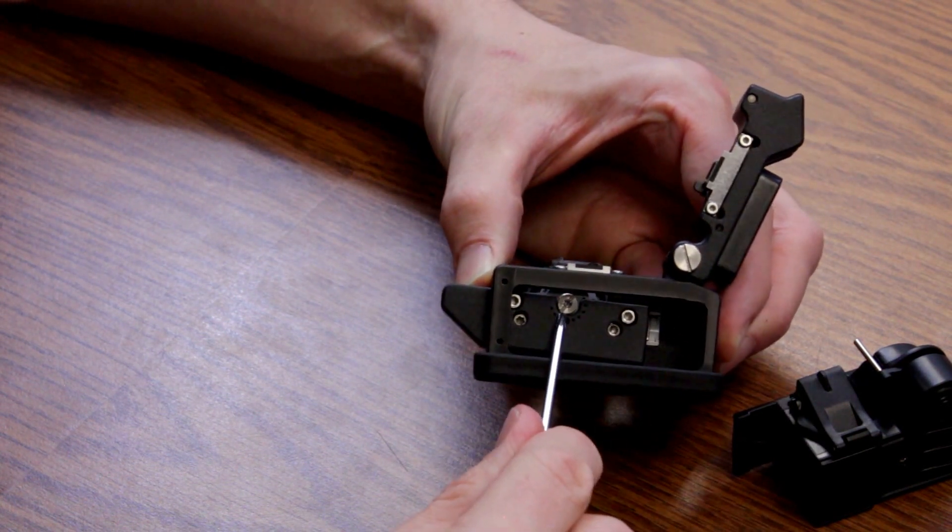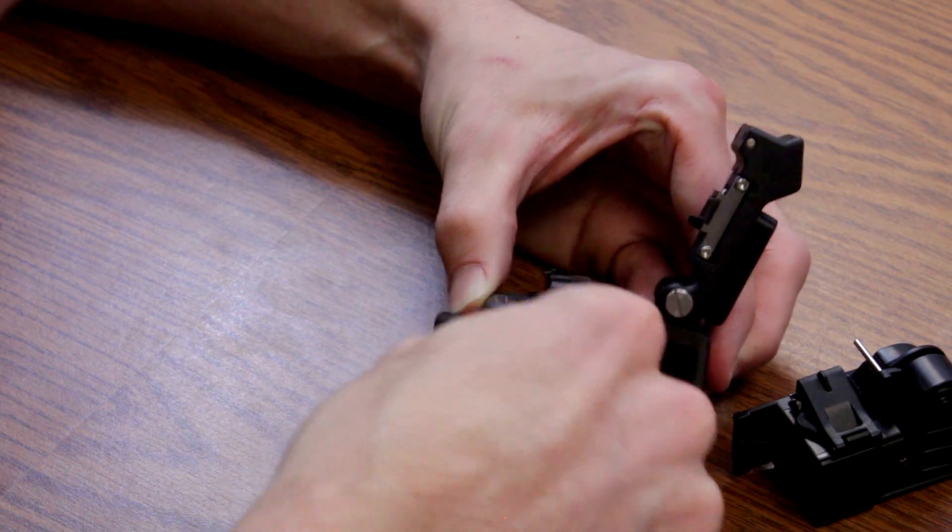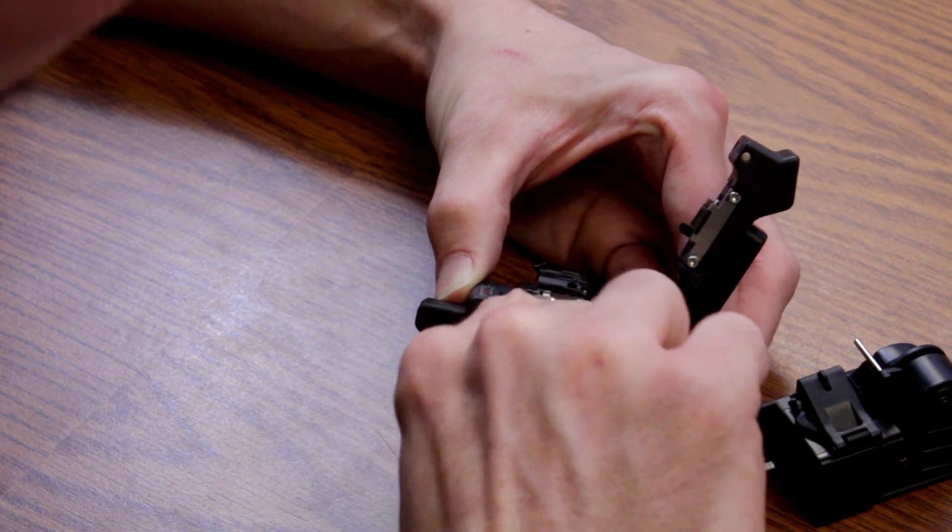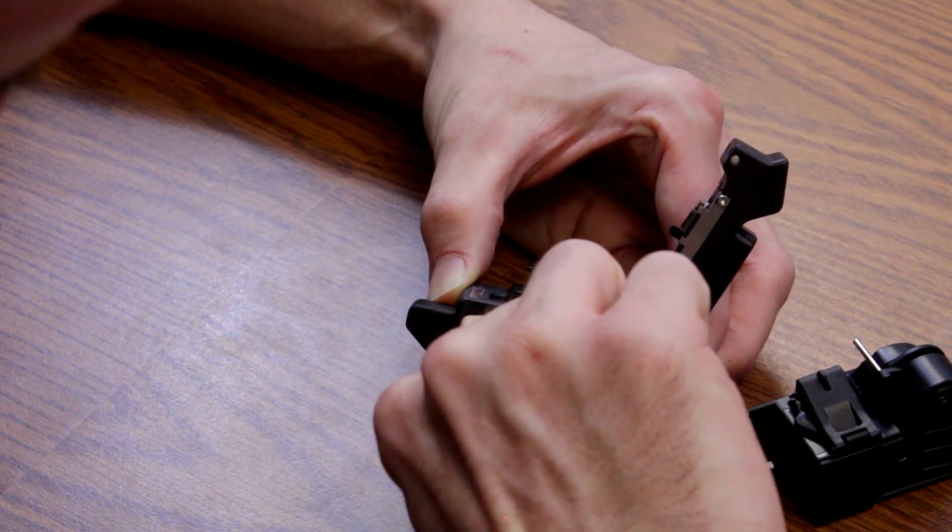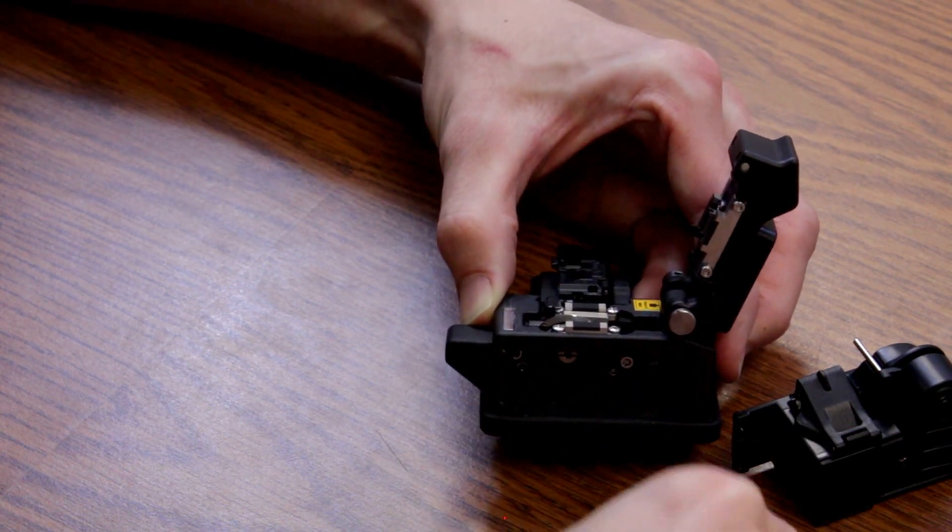So what we want to do is there's a screw right here on the side. You're going to take your tool and you're going to turn it to the left counterclockwise, just a half turn or a quarter turn. That will loosen the blade.